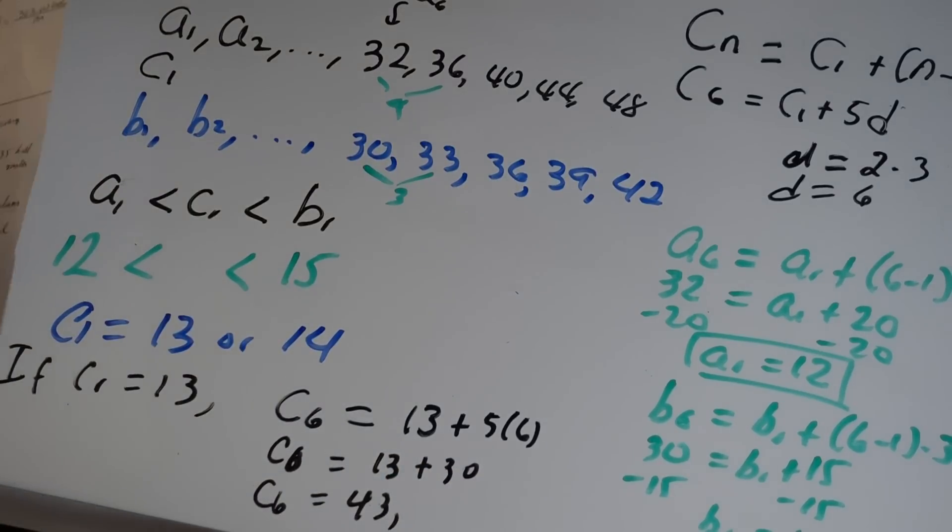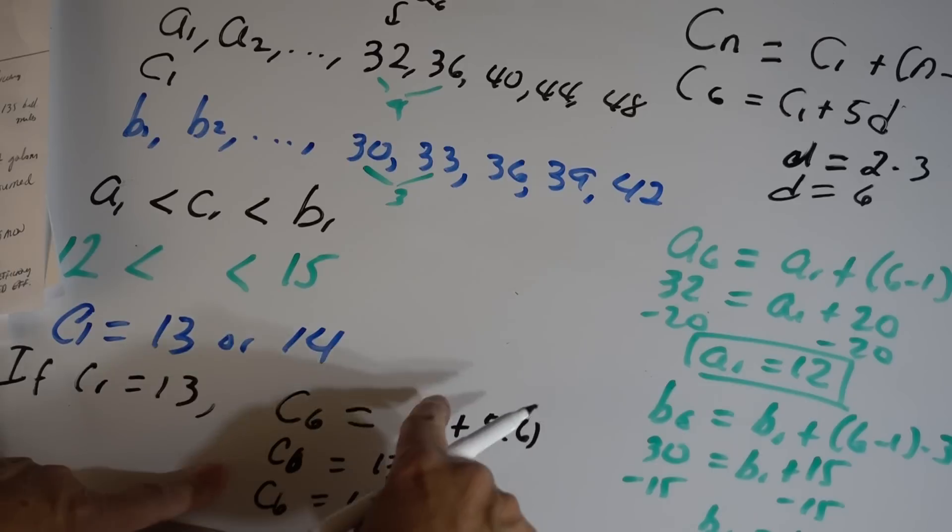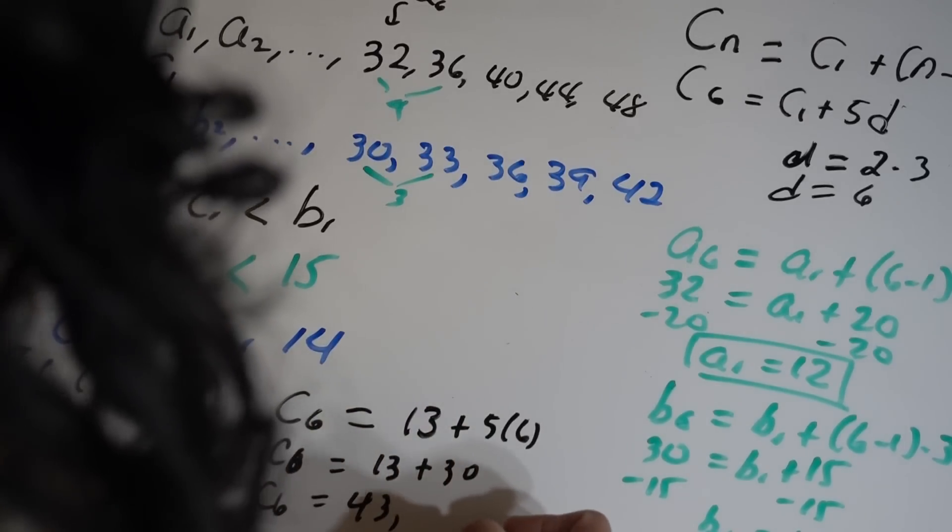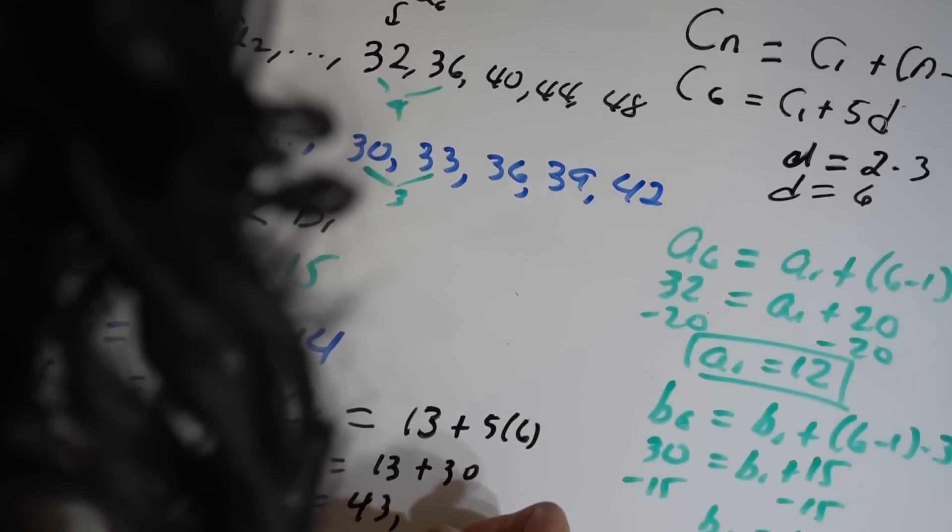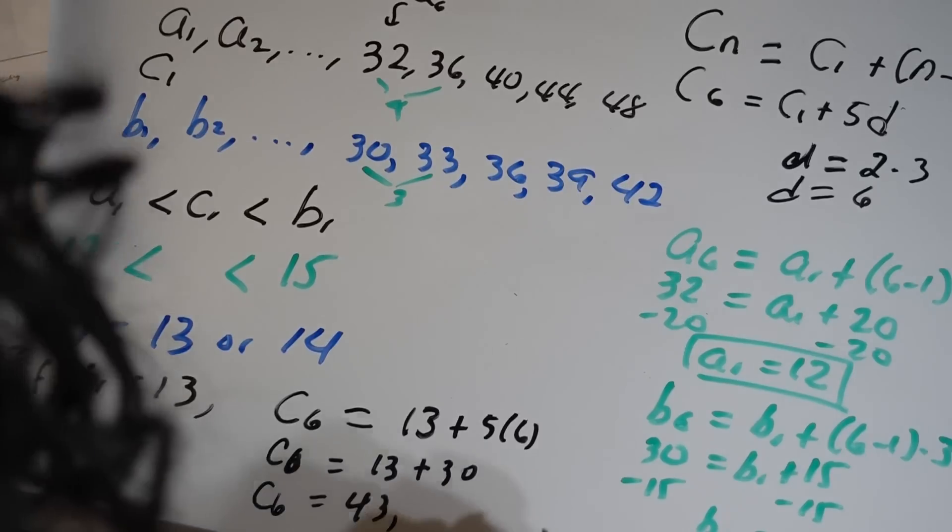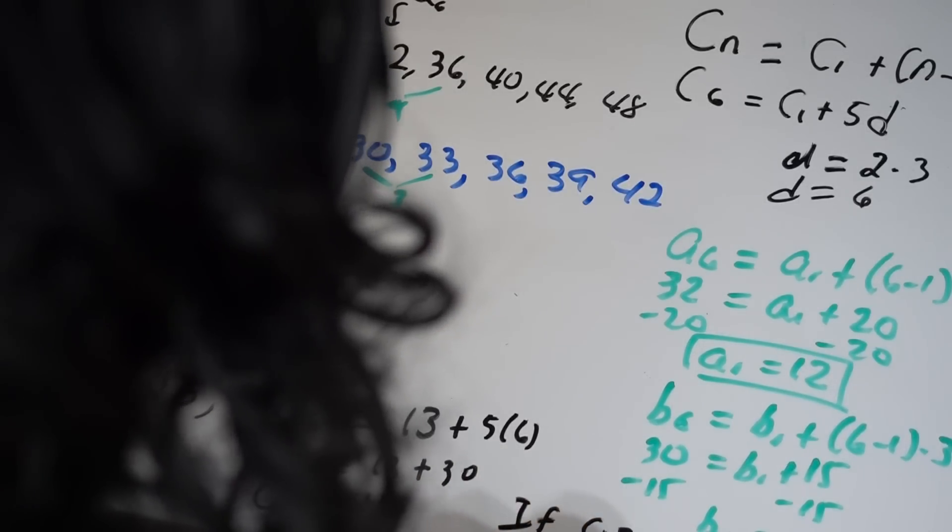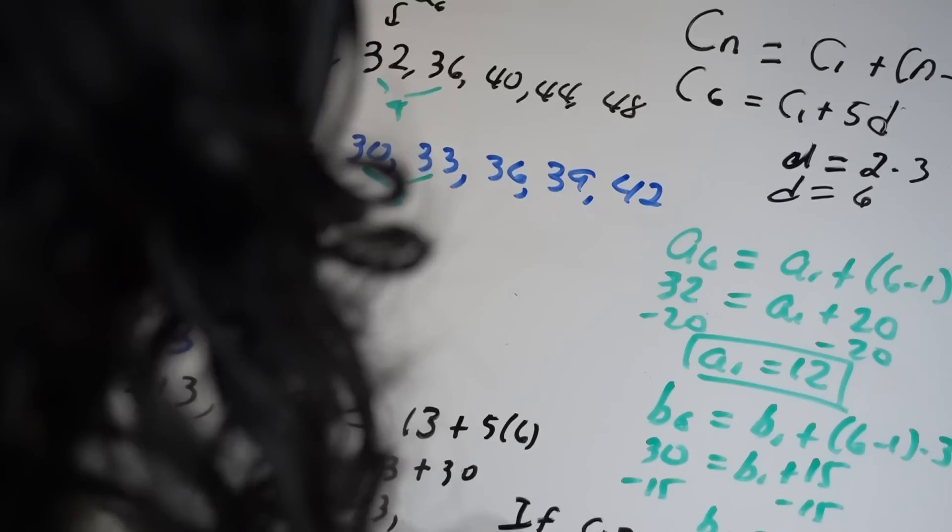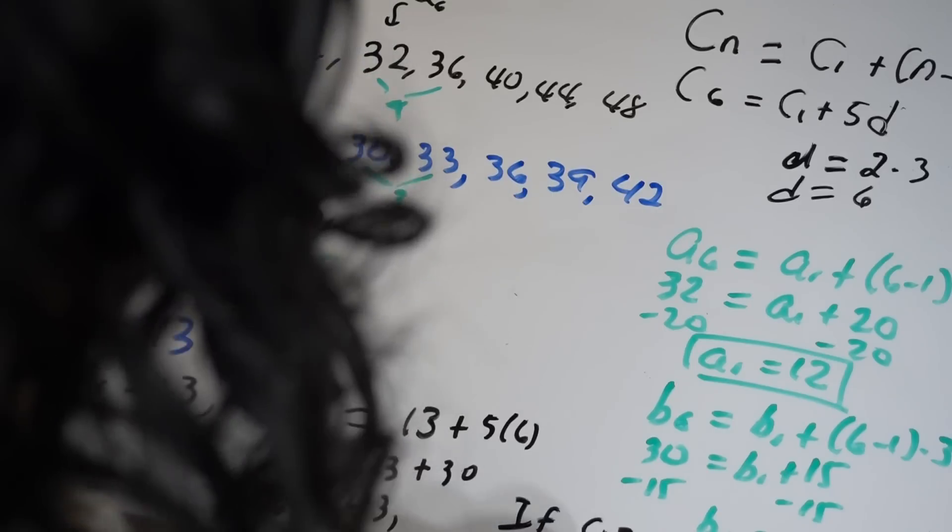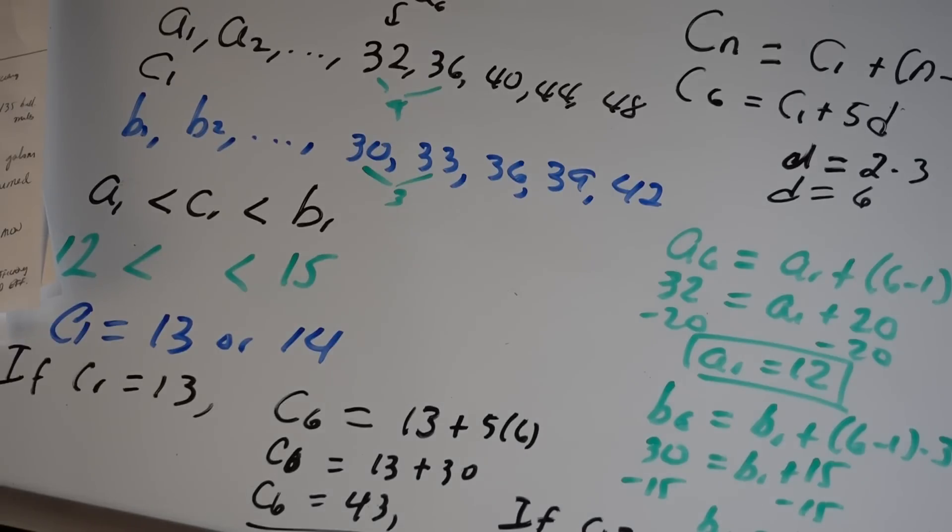That's one value. In case it's 14, there will be 44, right? You have just one more, 14. So if c_1 is 14, then c_6 is going to be 44. Those are the two possible answers for this problem.